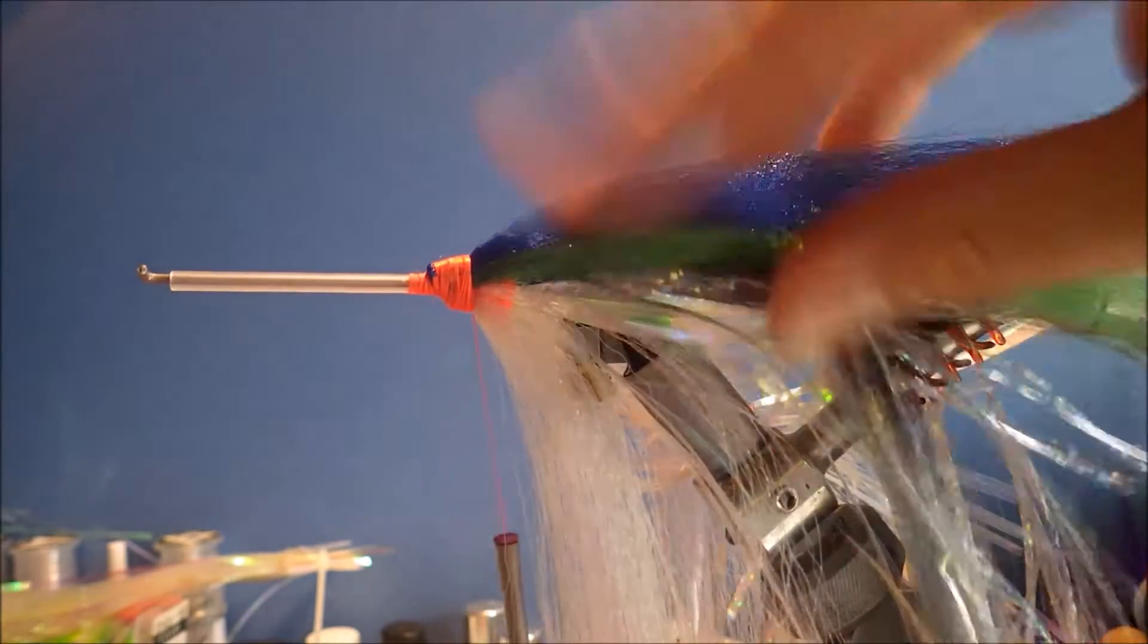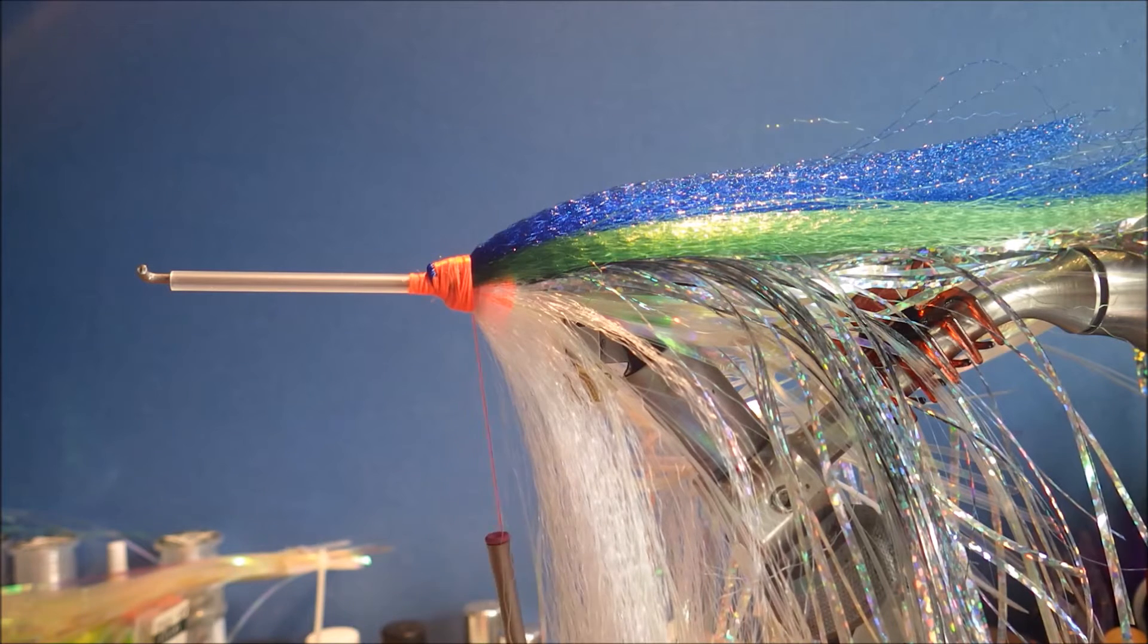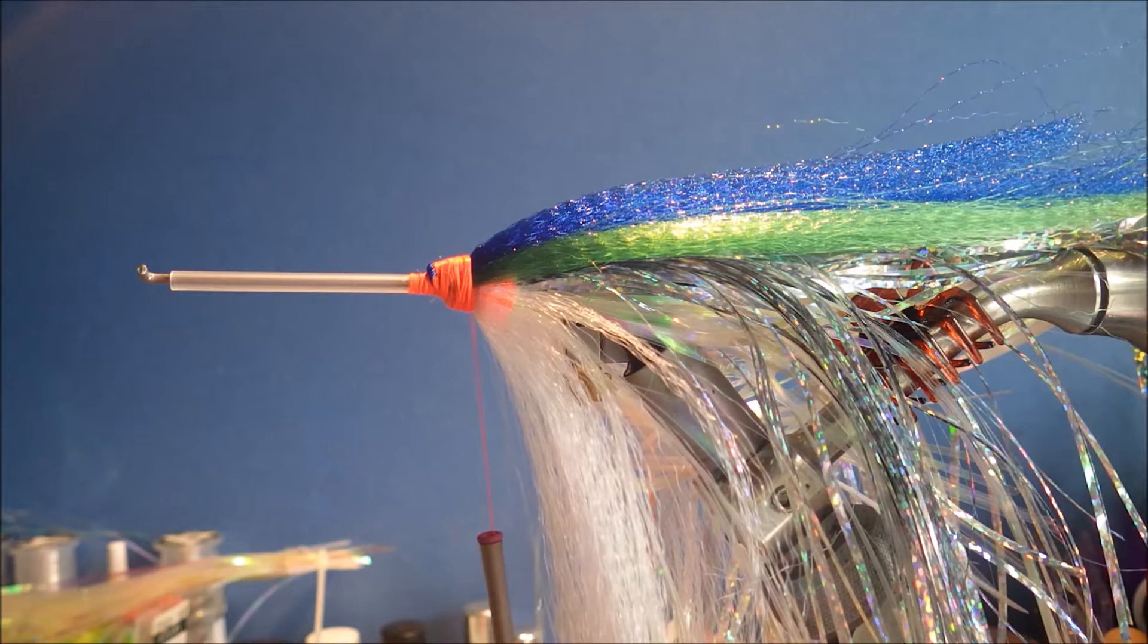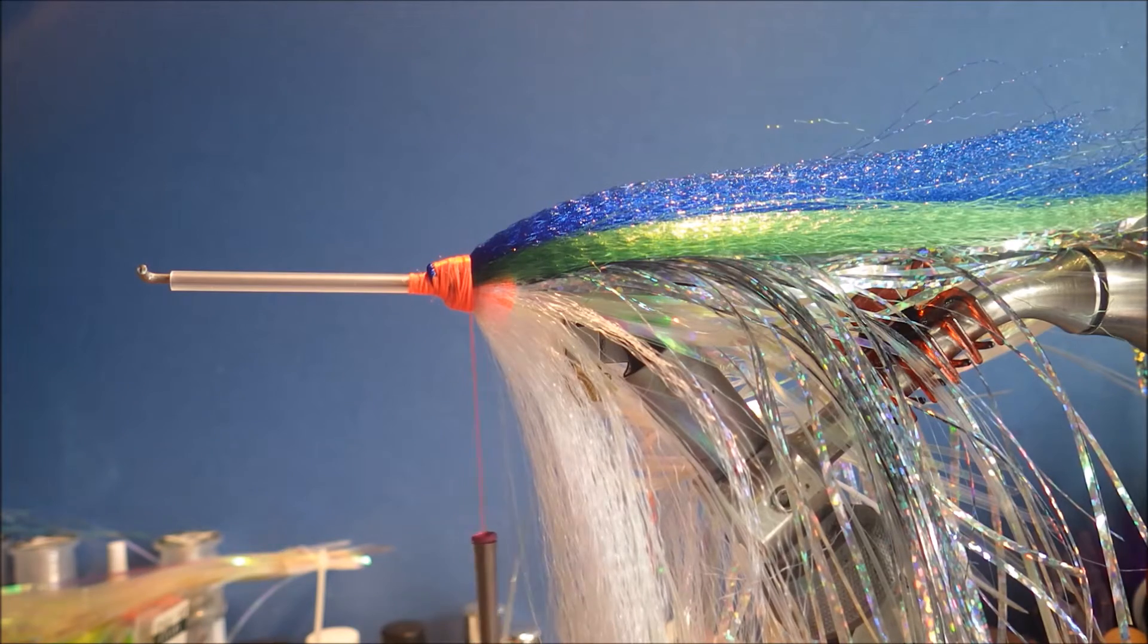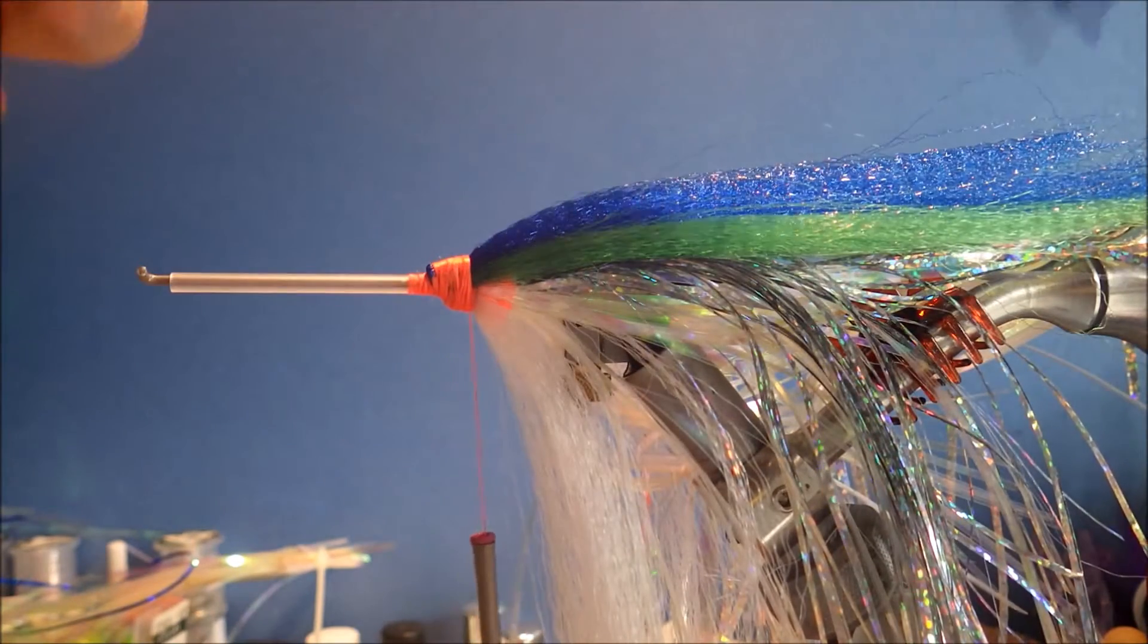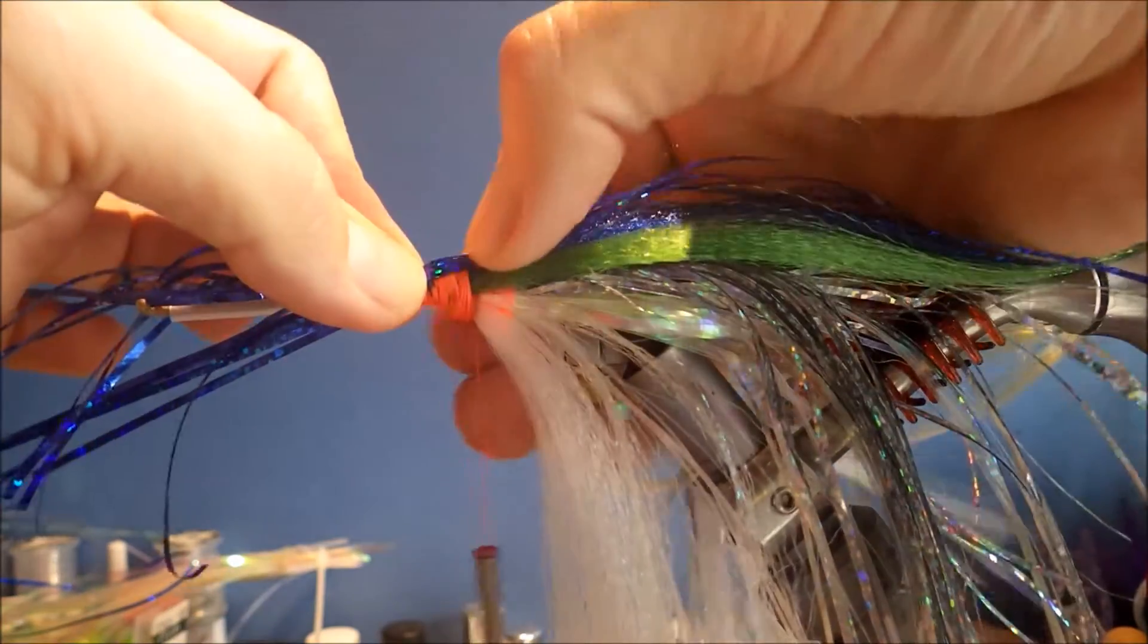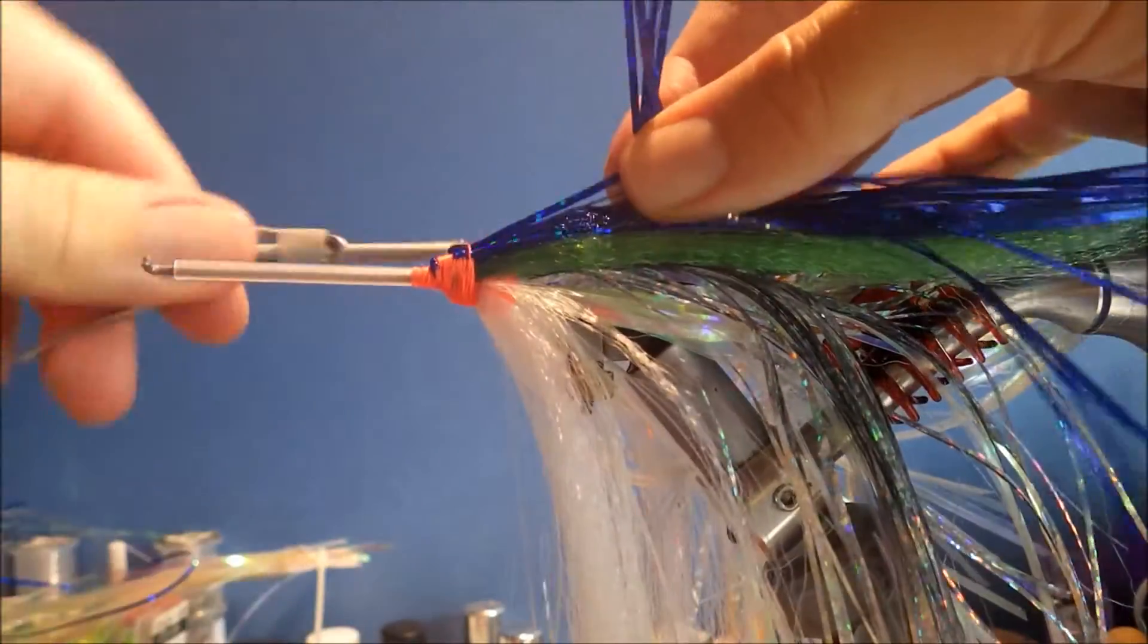I can build that up a bit. And then just to finish off the top, I'm going to take some blue flashaboo. Slightly smaller clump than before. This is just to sort of top off the back. I'm going to make the lengths a bit uneven. Tie it in, just control it with your thumbnail. Fold it again.